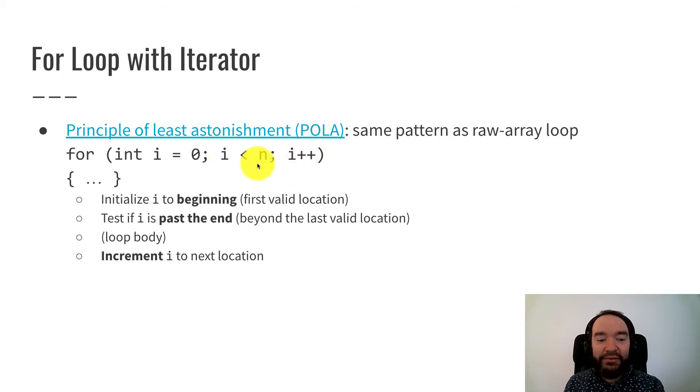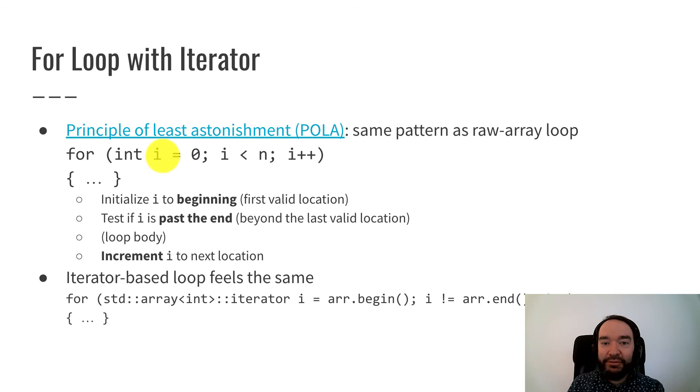The last value of i will be equal to n, and n is not a valid index. Now, it doesn't crash or anything. It works fine because of the way that the for loop works. First, we would increment i to n, then test this Boolean expression. It's false, so we skip over the body of the loop. So index starts at a valid location, gets incremented until we go past the last valid location. Iterator-based loops work the same way.